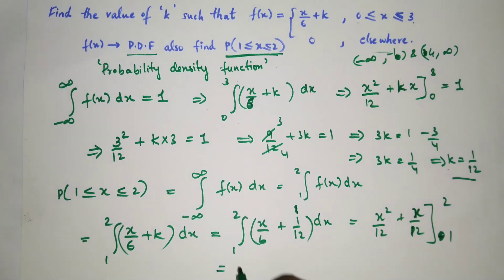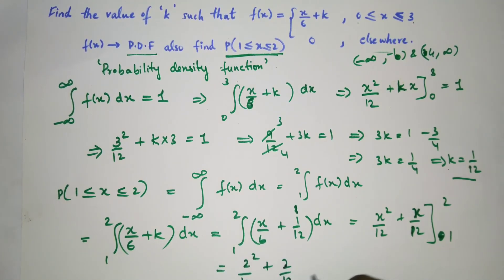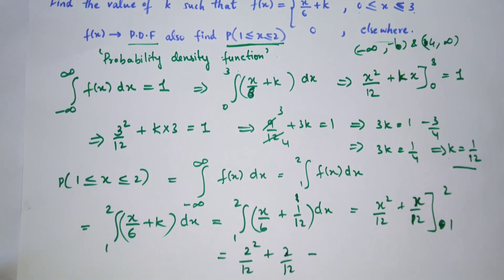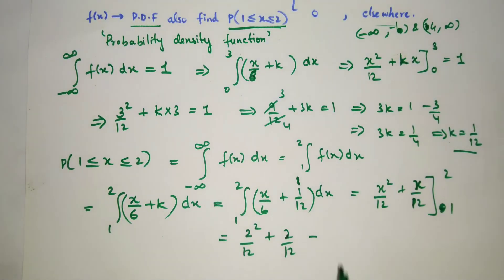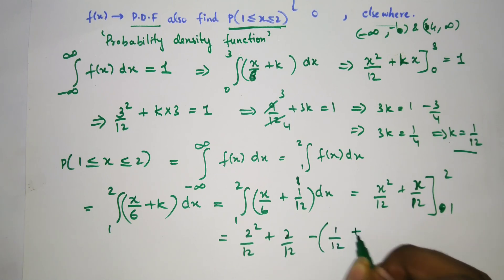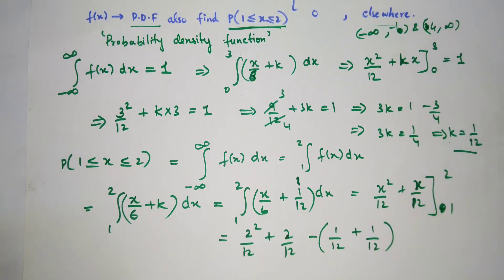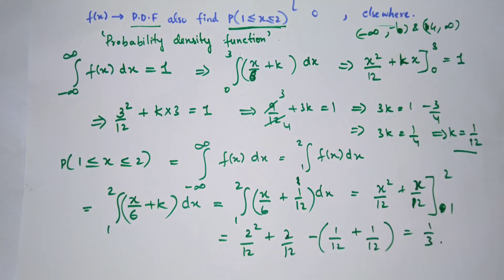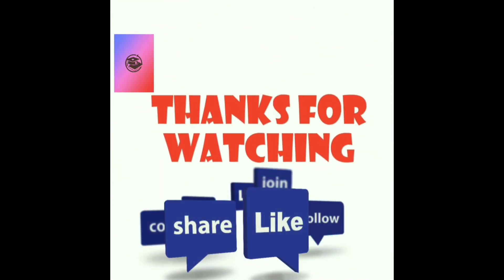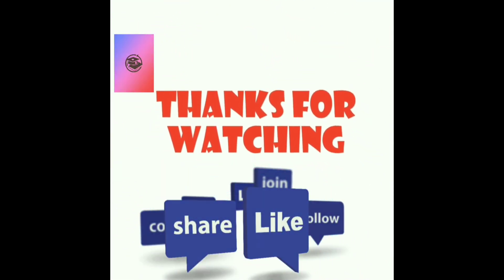Applying upper limit minus lower limit: (2²/12 + 2/12) − (1²/12 + 1/12) = (4/12 + 2/12) − (1/12 + 1/12) = 6/12 − 2/12 = 4/12 = 1/3. So the answer is 1/3.